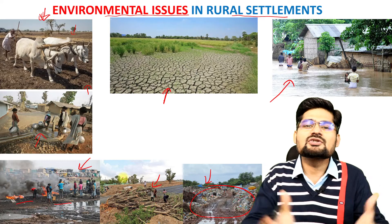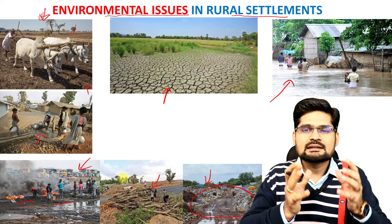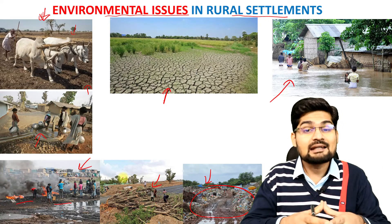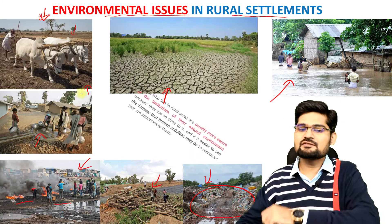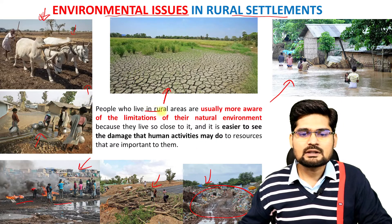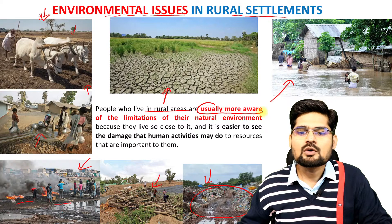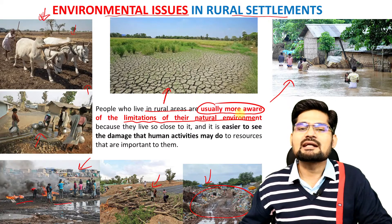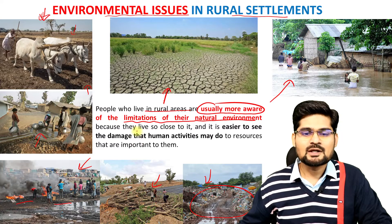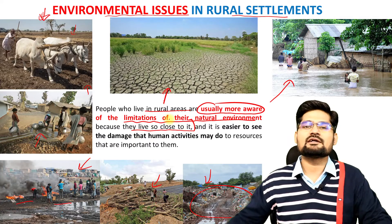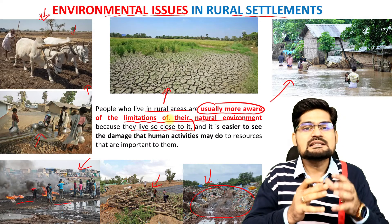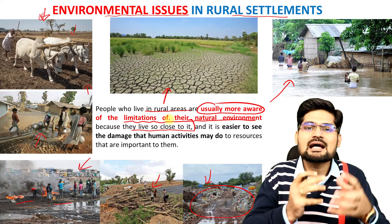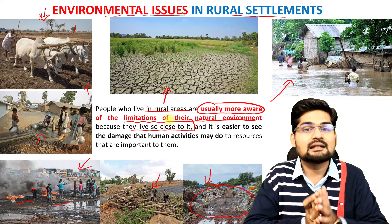There is a plethora — a collection of these environmental issues happening in the rural areas of the world and India. What you observe is that people who live in rural areas are usually more aware of their limitations and their natural environment, because they live so close to it. We say that rural people live in sync with nature, in synchronization.